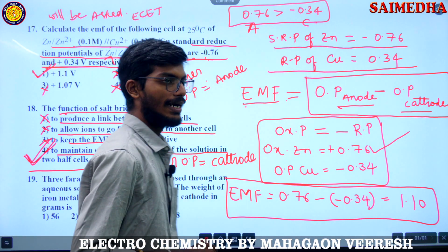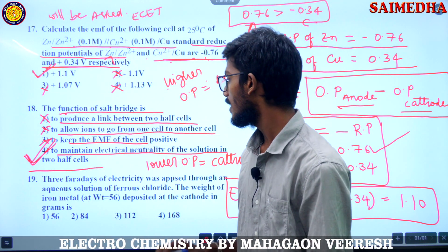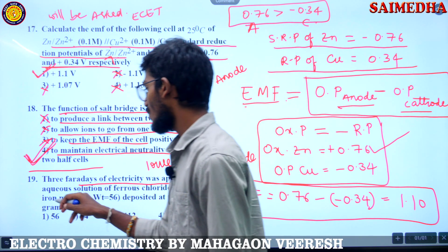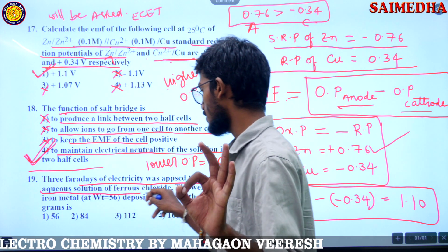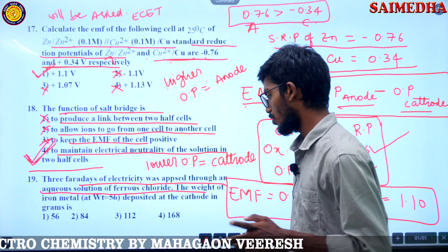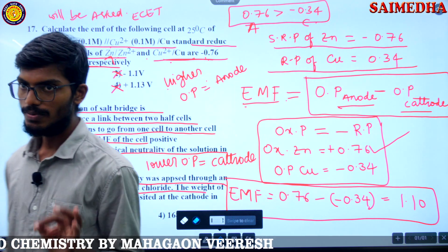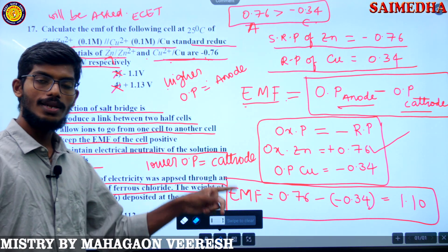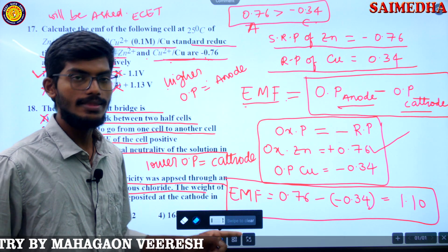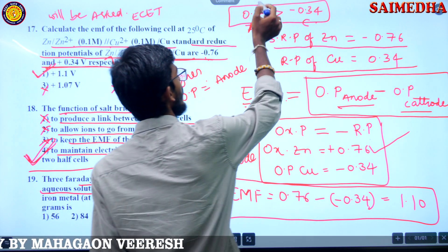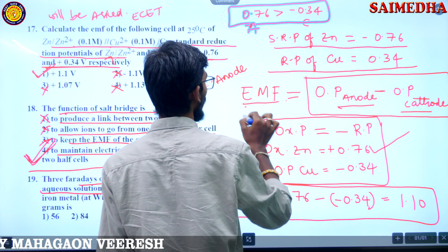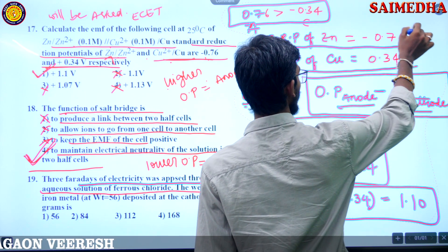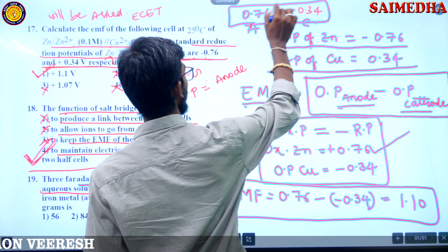Now the next question: three Faradays of electricity was passed through an aqueous solution. Take note of this before we proceed to the question about the weight of iron metal deposited at cathode.